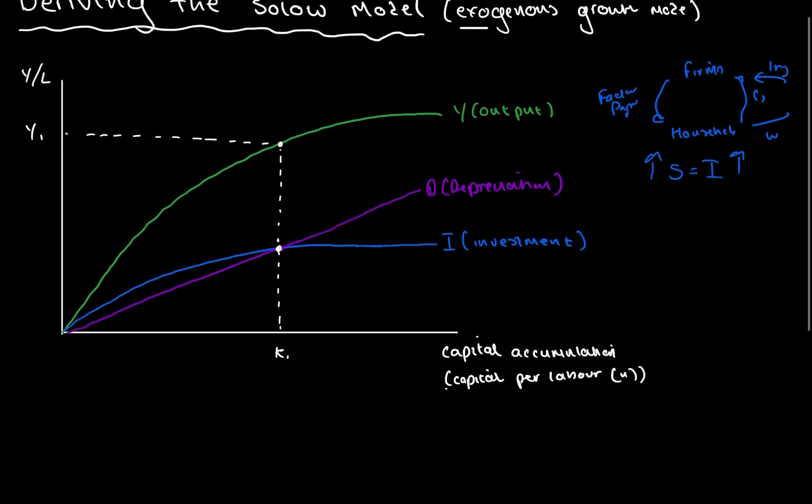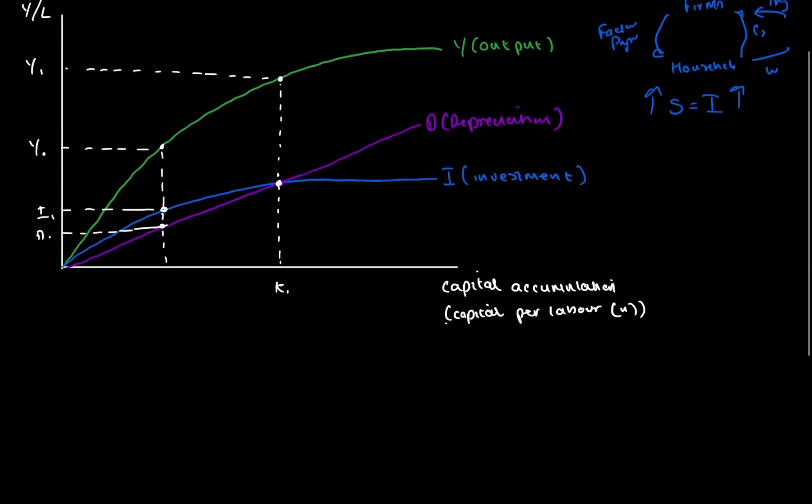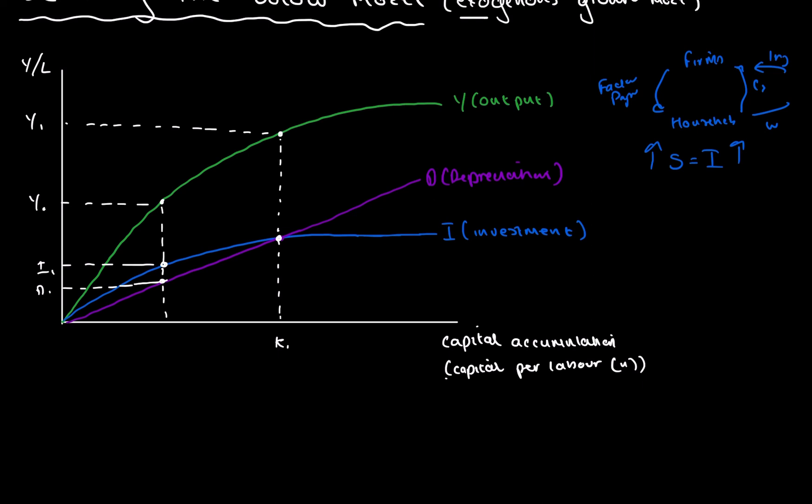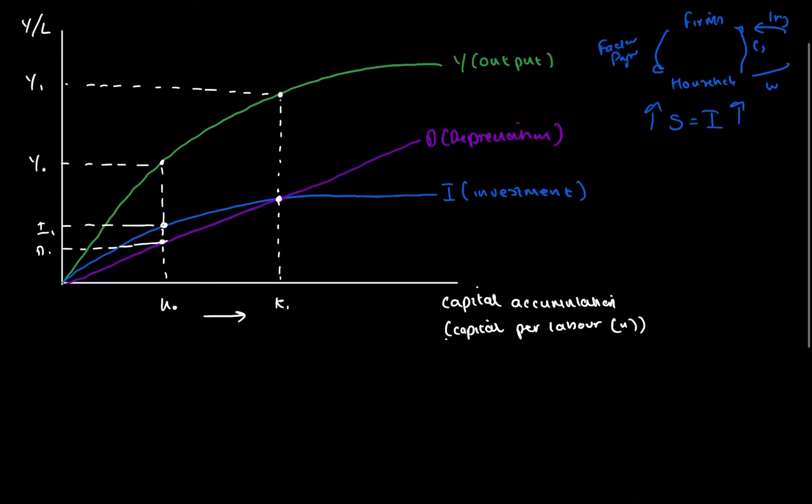However, if we were at a point here, we are operating with an output of, let's say, Y0 and an investment of I1 with depreciation D1. You can see that there is a gap between the investment and the depreciation. This means there is more investment than replacement investment. What this will cause, I'll call this K0, this will generate an output of Y0. As investment increases, we're going to have more and more replacement investments. This is going to bring us to K1 and Y1.